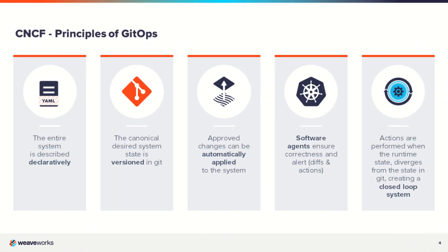CNCF has five principles for GitOps. The first is that the entire system is described declaratively. The second is that the canonical desired system state is versioned in Git. The third is that approved changes can be automatically applied to the system. Software agents ensure correctness and alert on differences and take action to remediate drifts. Those actions are performed when the runtime state diverges from state in Git, creating a closed-loop system — ensuring that your runtime is never drifting away from your desired state.